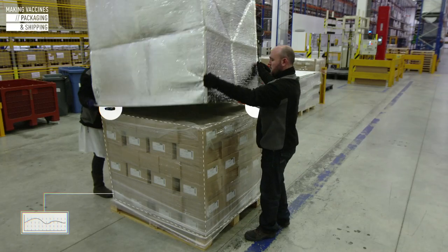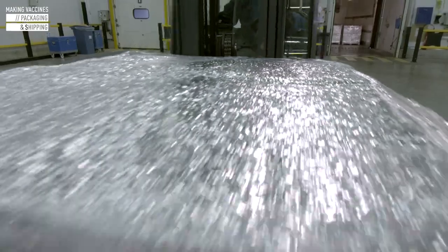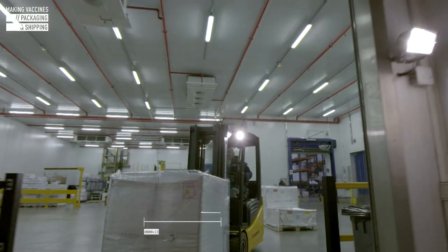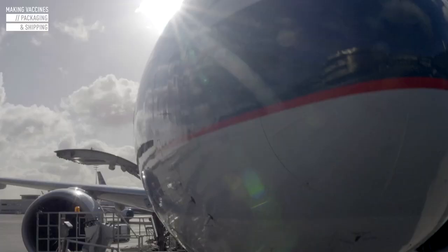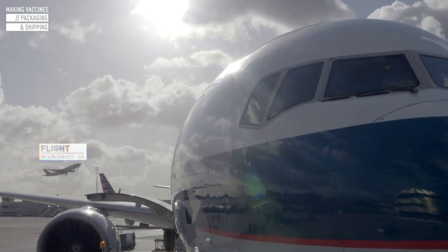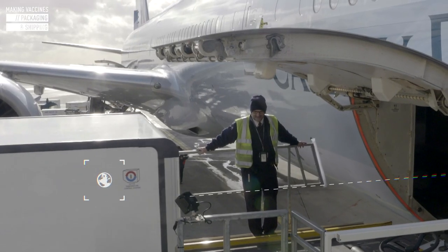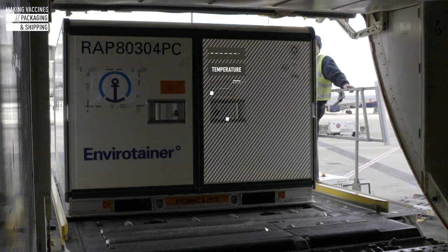Throughout packaging and shipping, vaccines must be stored between 2 and 8 degrees Celsius. Cold rooms and temperature-controlled shipping solutions, such as refrigerated containers and isothermal packaging, protect the vaccines during each phase of transportation and storage. A temperature tracking device is included in each shipment.